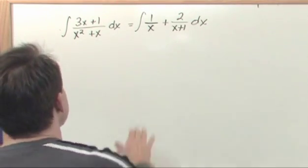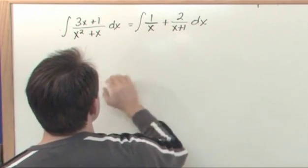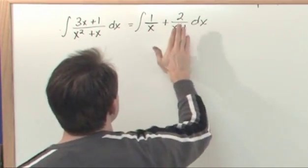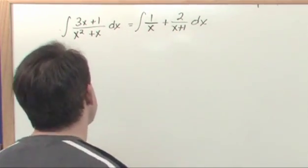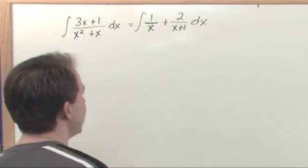You can integrate that, because here you have the integral of the sum of two things, which is just the integral of the first thing, plus the integral of the second thing. This integral is just the natural log of x.